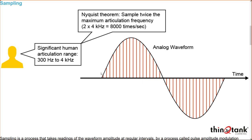The more samples you can create, the closer they are together and the more representative they are of the actual analog waveform. But there's a trade-off: processing time, bandwidth, and file size. For example, a 128K MP3 is much smaller than a 192K MP3.